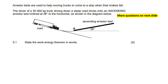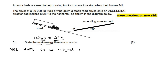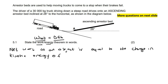The first question says: state the work-energy theorem. The work-energy theorem comes from the formula W_net equals delta E_k. It states that the net work done on an object is equal to the change in kinetic energy of the object.